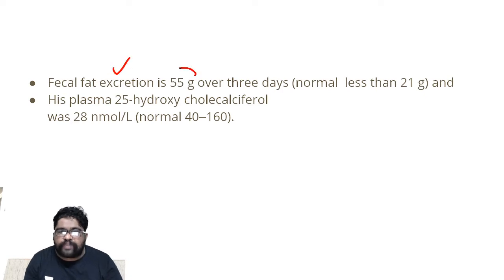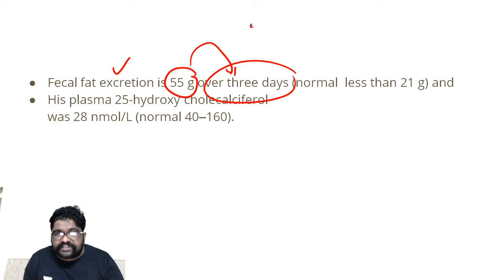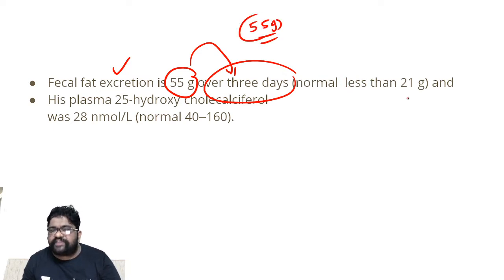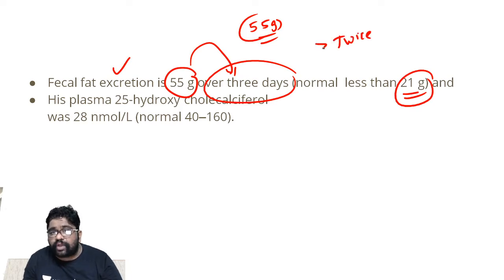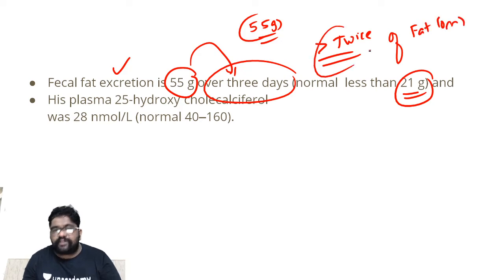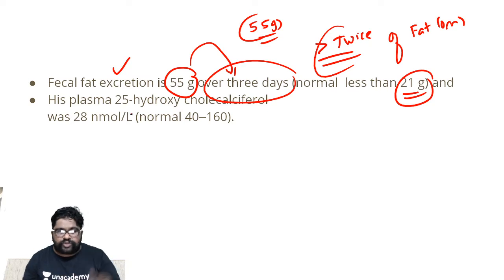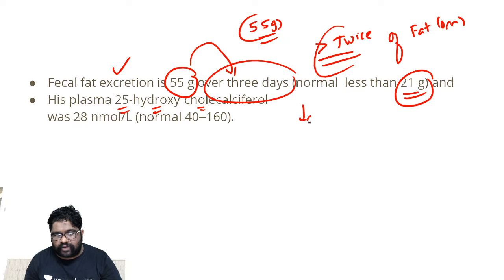The fecal fat excretion was found to be 55 grams over 3 days, not over 1 day. The normal loss of fat in 3 days is 21 grams, so the patient is losing approximately twice or more than twice that amount of fat. This confirms my suspicion that it can be a steatorrheal state. Also, his plasma 25-hydroxycholecalciferol is coming down — the normal value is between 40 to 160 nanomoles per liter, but the patient is having 28.